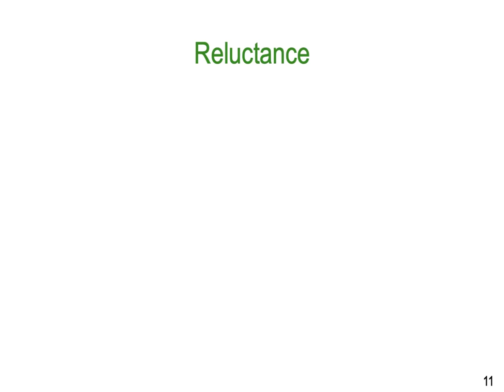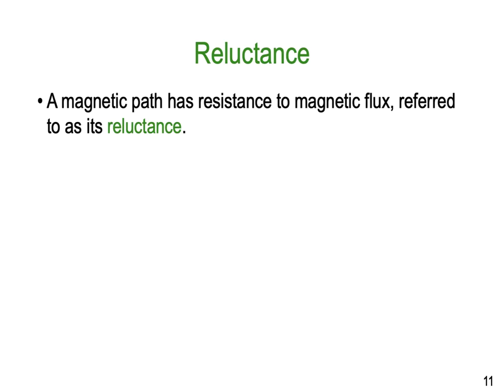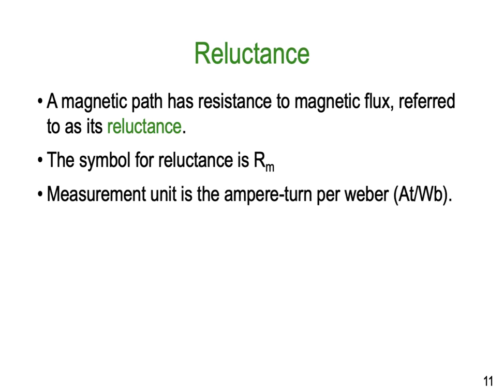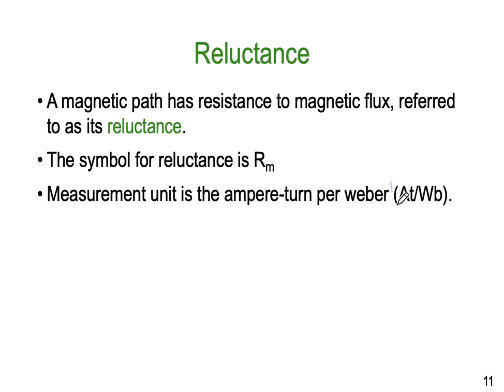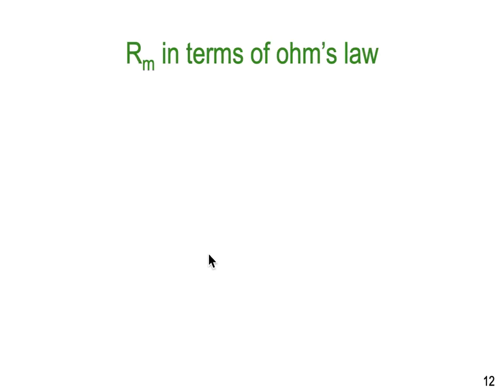The next concept we need to think about is reluctance. As the name implies, it's analogous to resistance — how reluctant is the path to let a magnetic field pass through it? A magnetic path has a resistance to a magnetic field, and we refer to this as its reluctance. The symbol is R subscript small m, and we measure this in amp turns per Weber. Again, the units tell us the formula: it's amp turns divided by Webers.